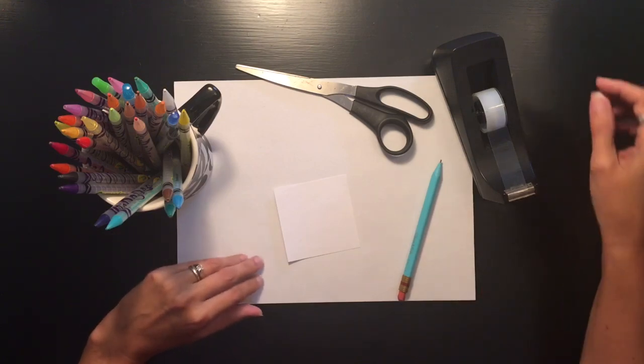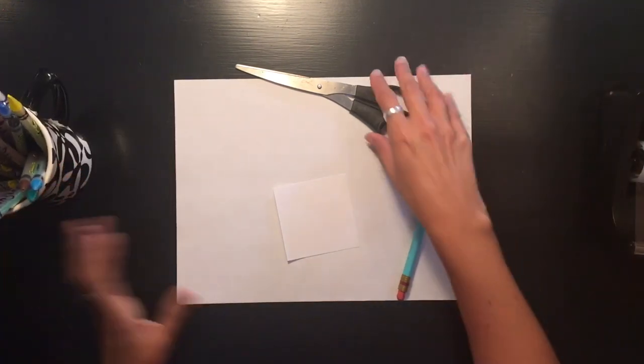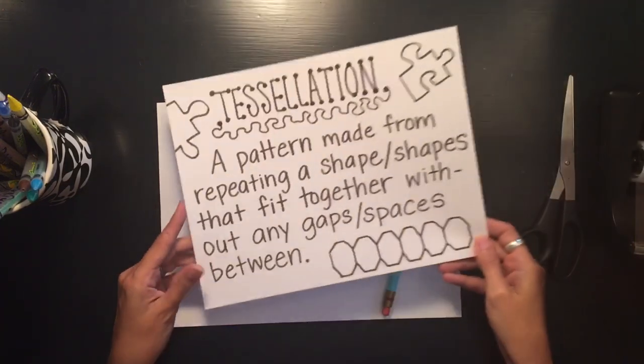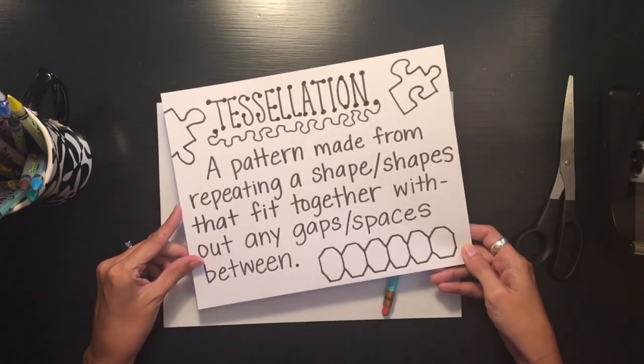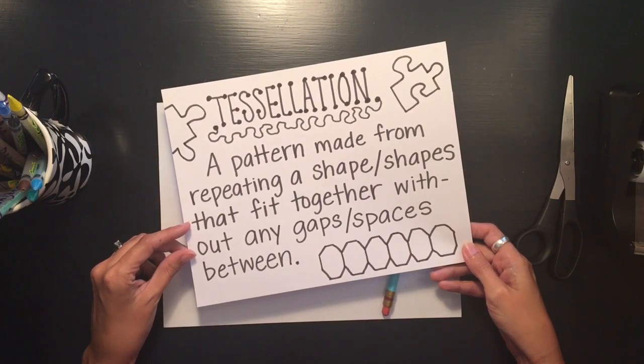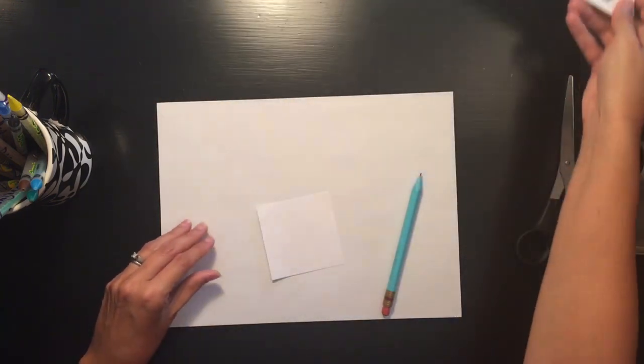We're going to be creating a tessellation today, and a tessellation is basically a pattern that is made from repeating a shape or shapes that fit together without any gaps or spaces between. So to create our tessellation, we'll begin with our square.